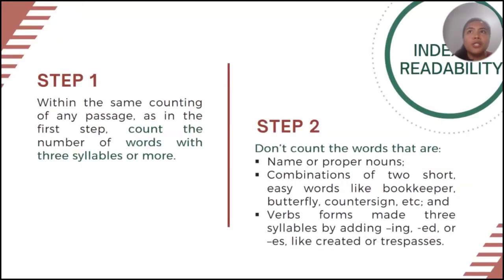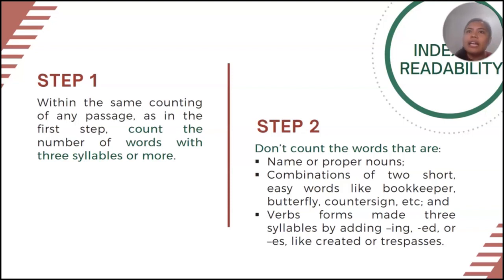To find the index of readability based on the number of words, we have to count the words with three syllables or more. Do not count words that are names or proper nouns, combinations of two short easy words like 'bookkeeper,' 'butterfly,' 'countersign,' etc., and verb forms made into three syllables by adding -ing, -ed, or -es, like 'created' or 'trespasses.'